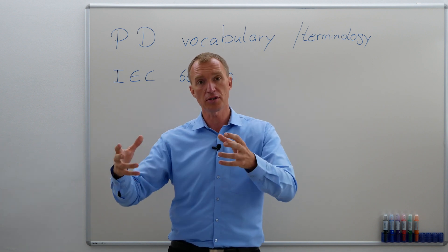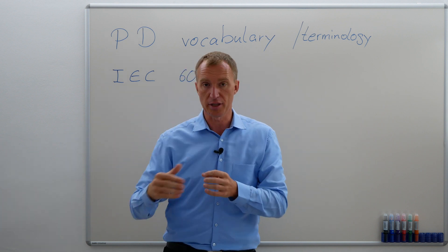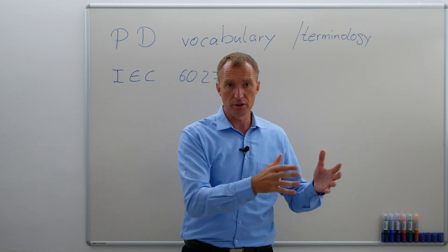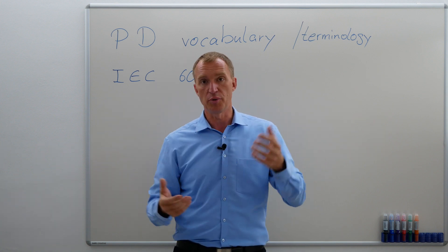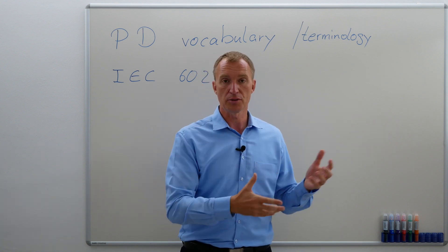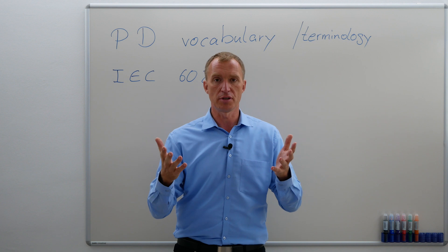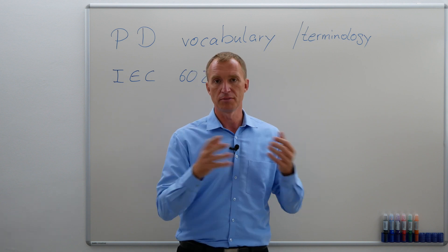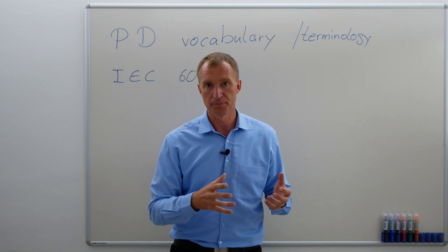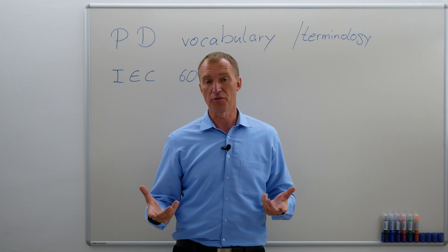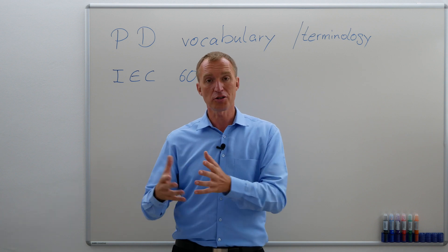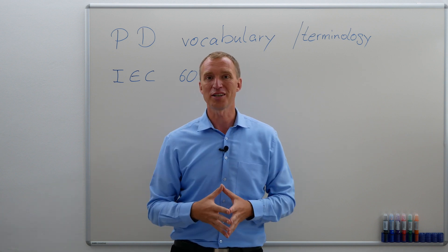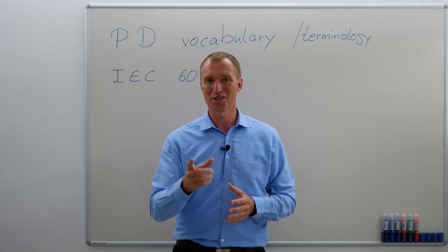Partial discharges can be external, for example corona; they can be internal, for example a void or electrical tree; and then we can have surface discharges that can actually happen outside or inside. Now that we have defined partial discharge, let's go on to the next videos. See you soon.